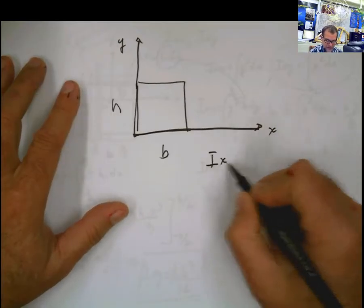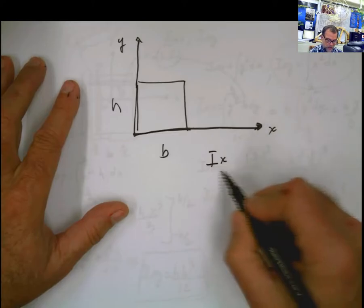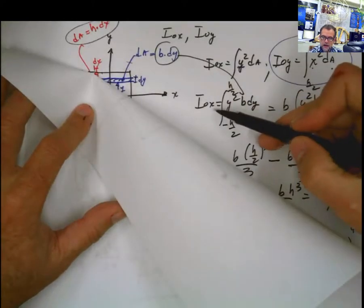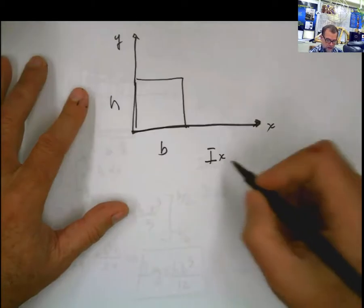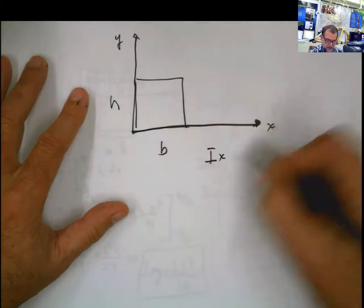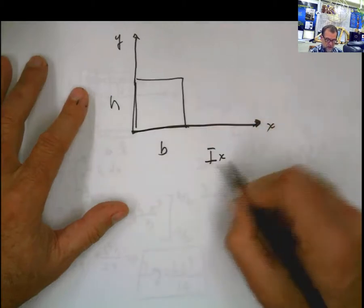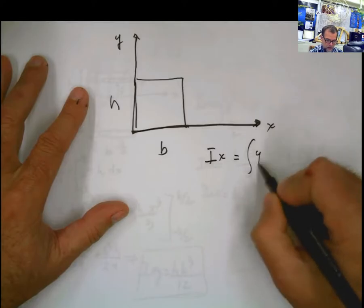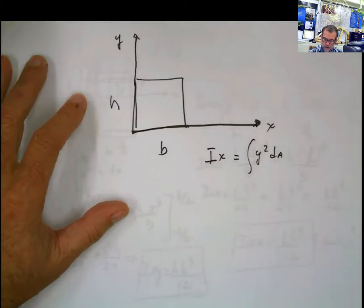I_x, in this case, is not centroidal. In the other case, it was I_0x. And the only difference is this naught here, this 0, representing centroid. So in this case, x represents the x-axis. So I_x is going to be equal to the integral of y squared dA. And the rest of the procedure is the same.